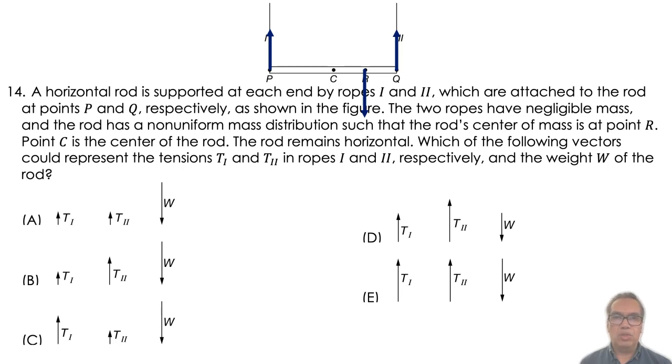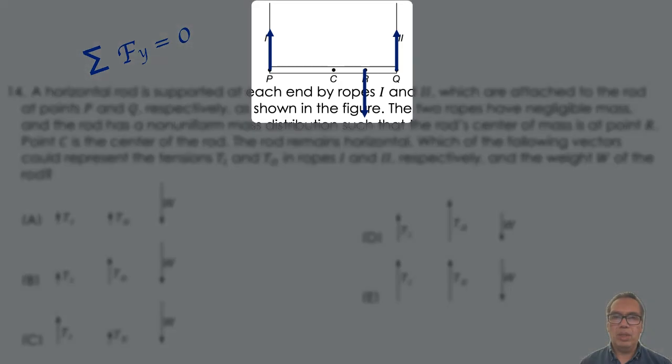There are two aspects to consider in this equilibrium situation. On the one hand, there is equilibrium of forces in the vertical direction. This means the sum of the two upward forces must be equal to the magnitude of the one downward force.